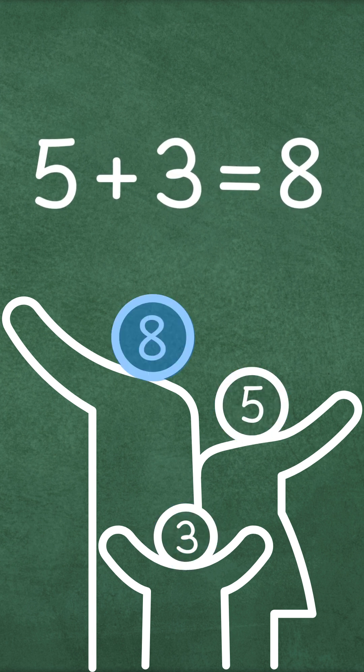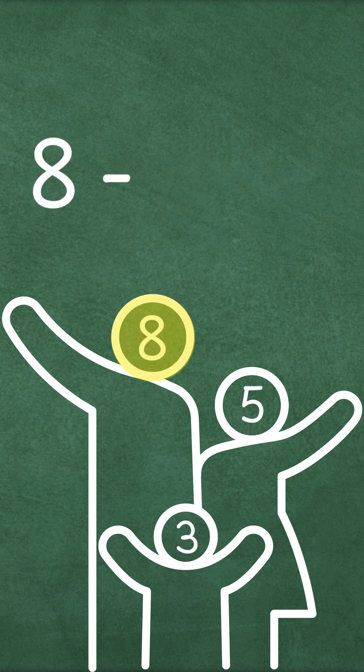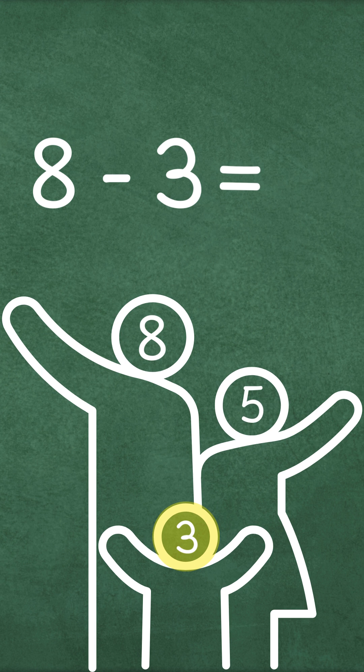Now let's use subtraction to go backwards. If we start with 8 and take away 3, we get 5. And if we take 5 away instead, 8 minus 5, that equals 3.